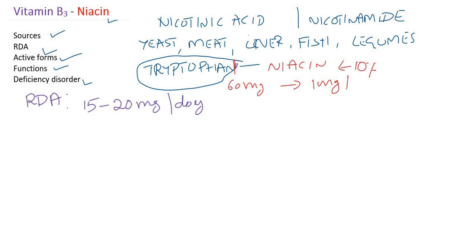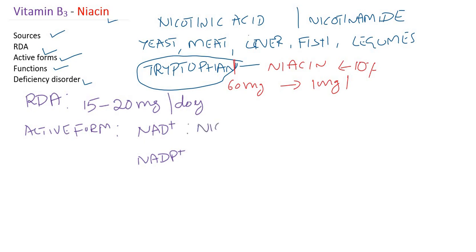What are the active forms? The coenzyme forms of Vitamin B3 or niacin — there are two active forms. One is NAD+, which stands for Nicotinamide Adenine Dinucleotide. The other active form is NADP+.